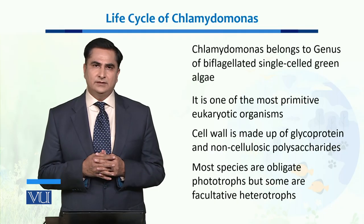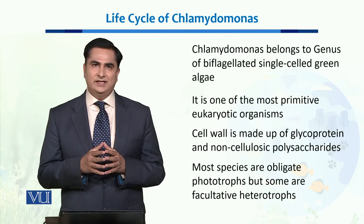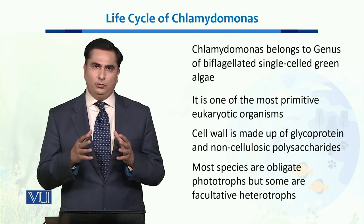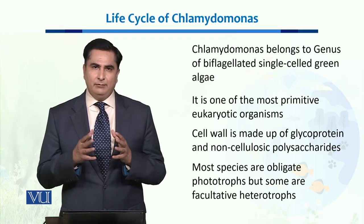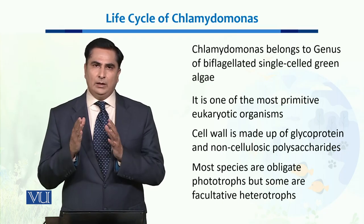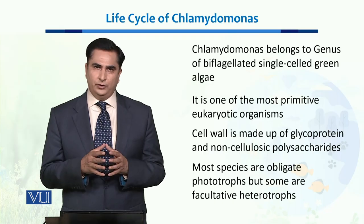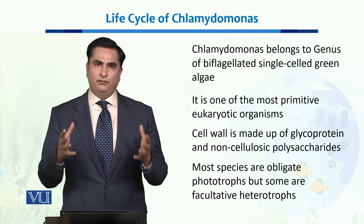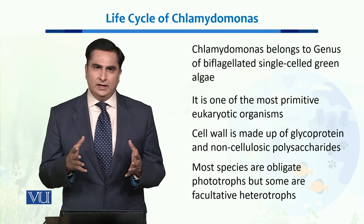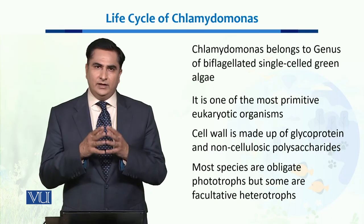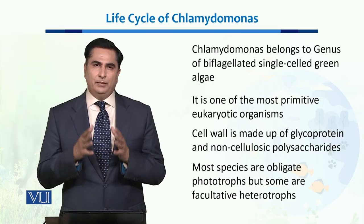Most species of Chlamydomonas are obligate photoautotrophs, meaning with the help of sunlight they synthesize their own food. They roam freely in the water and use sunlight to produce their own food.